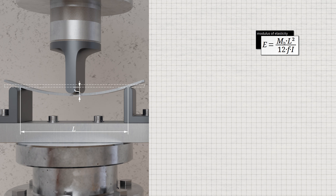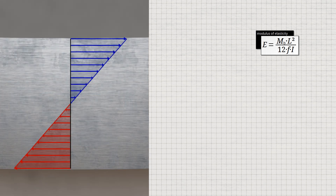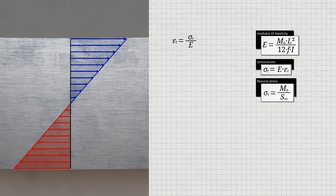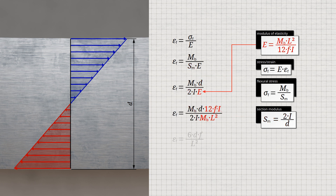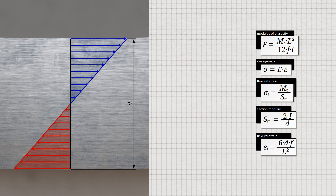With this relationship between Young's modulus and deflection, it is also possible to determine the flexural strain. The general relationship between an applied stress and the resulting strain is obtained in the elastic range using the modulus of elasticity. The flexural stress on the material surface is determined by the applied bending moment and the section modulus, which is in turn determined by the second area moment and the material thickness. Using the given formula for Young's modulus, we finally obtain the formula for calculating the flexural strain. Note that this equation is only valid for elastic deformation.